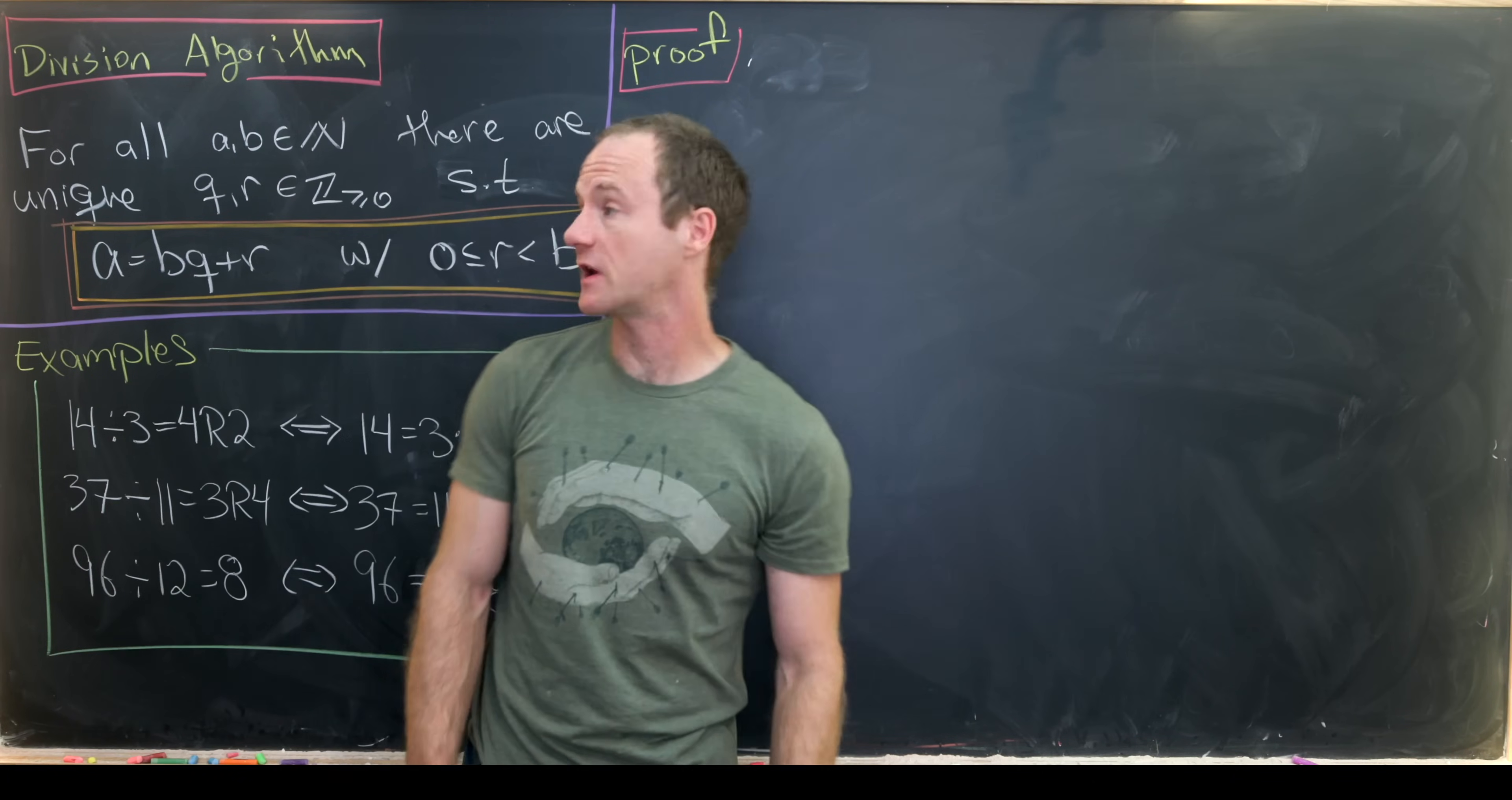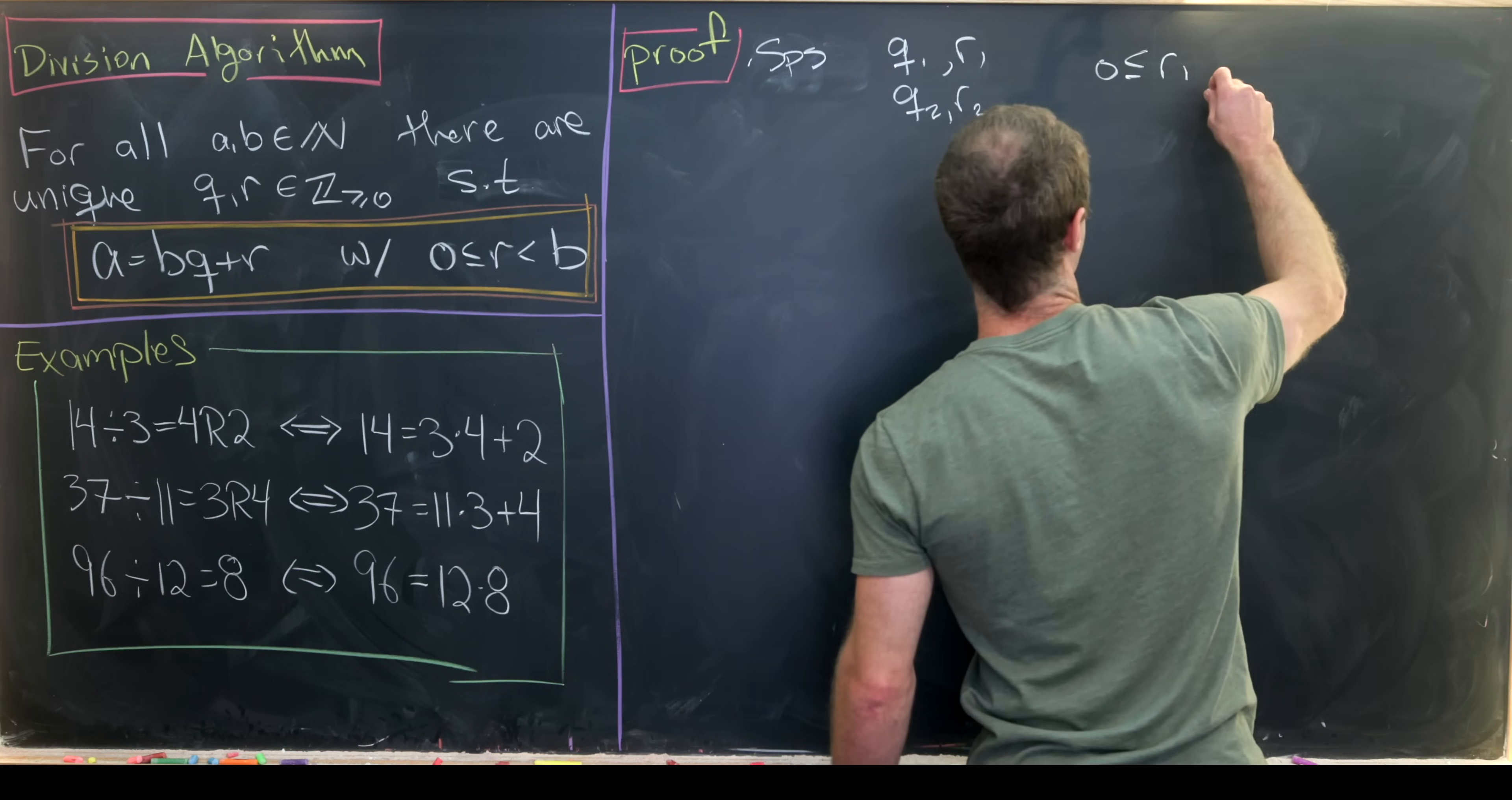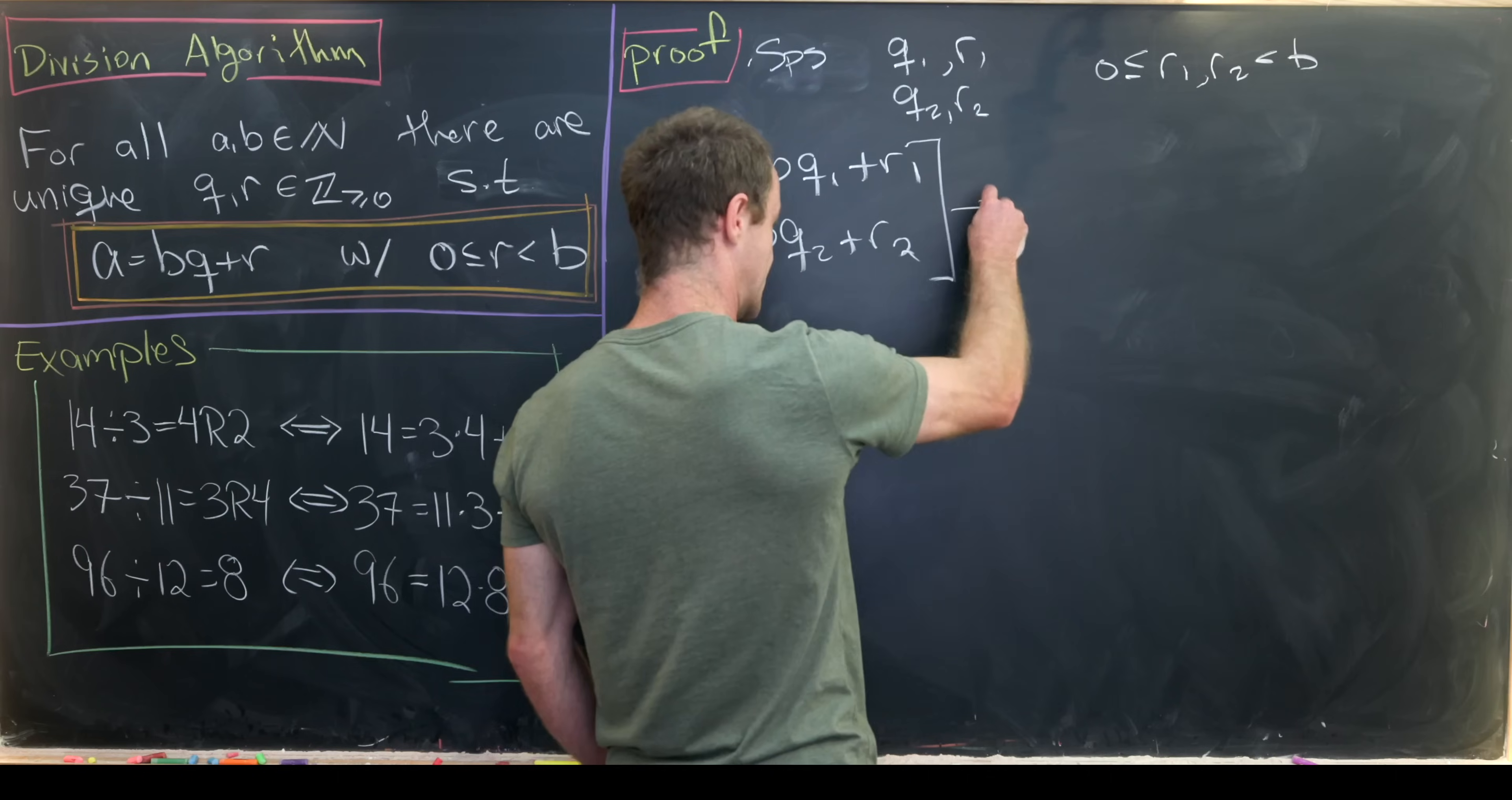So we'll prove uniqueness by starting out that we have two expressions like this and showing that those are actually the same expression. So let's suppose we have q1 and r1, and q2 and r2, where 0 is less than or equal to r1, r2, which is less than b. And we have a equals bq1 plus r1 and a equals bq2 plus r2. And now what we'll do is we'll subtract these two equations.